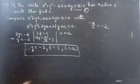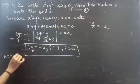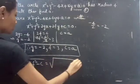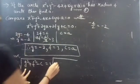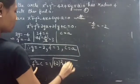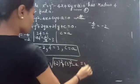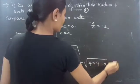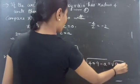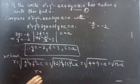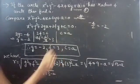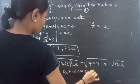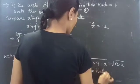Now we are going to substitute all these values into the radius formula. We have r = √(g² + f²- c) = √((-2)² + 3² - a) = √(4 + 9 - a) = √(13 - a). So we got r = √(13 - a).